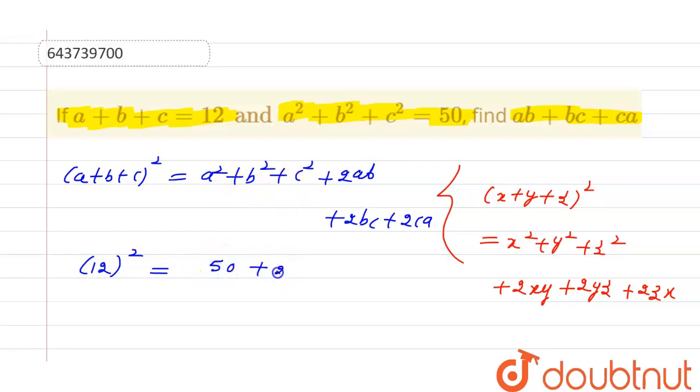Now we can take 2 common from this, so we will get ab plus bc plus ca. So this is equal to 144 minus 50 equals twice of ab plus bc plus ca.